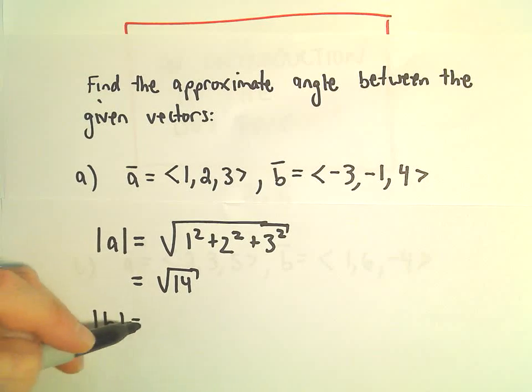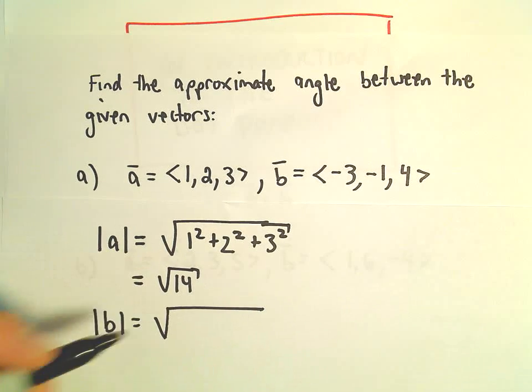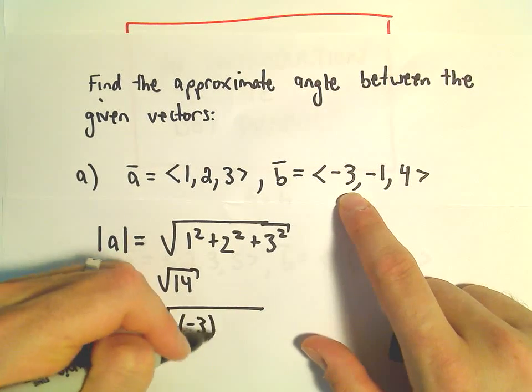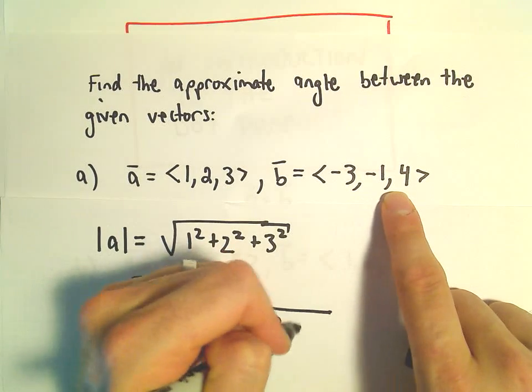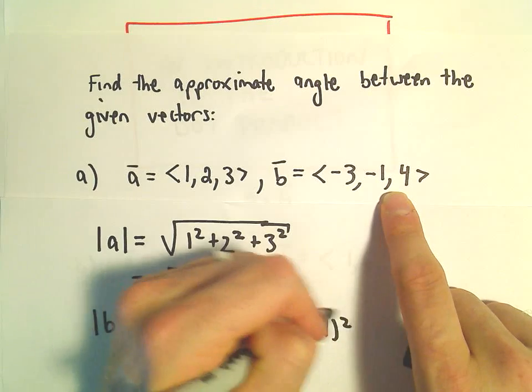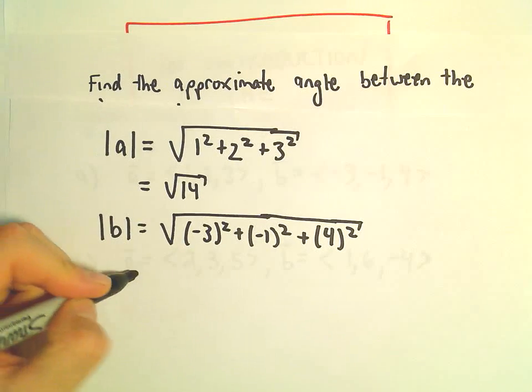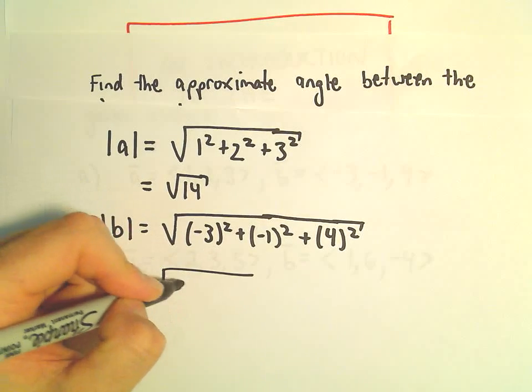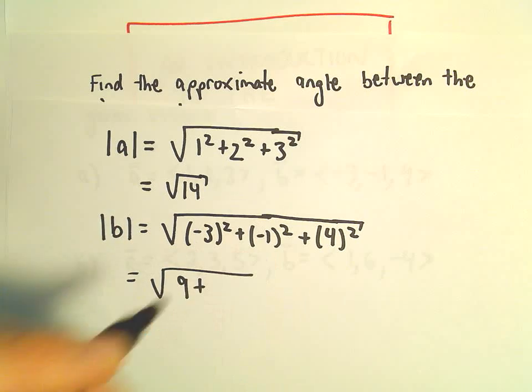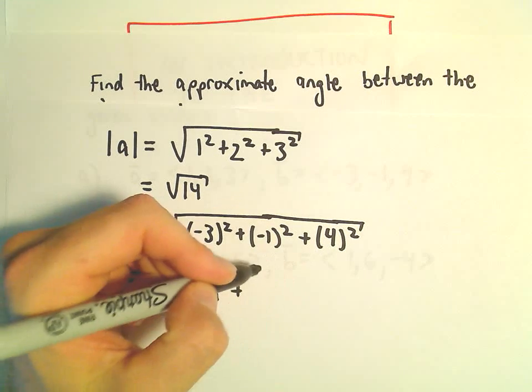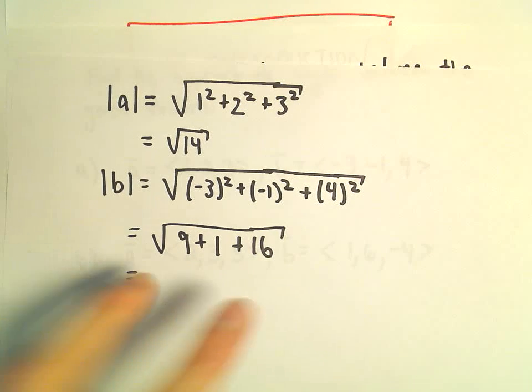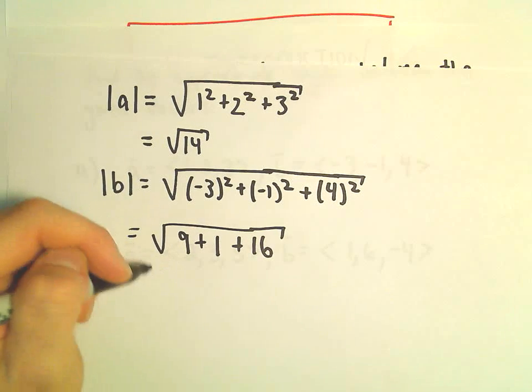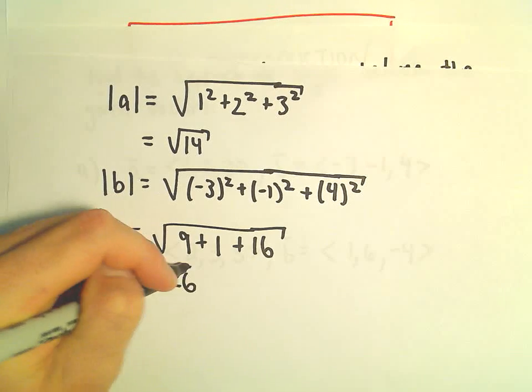The magnitude of vector b, we'll have to take negative 3 and square it, negative 1 and square it, and then we'll add 4 squared. So negative 3 squared is 9, negative 1 squared is 1, 4 squared is going to be 16. So it looks like we've got 10 plus 16 or the square root of 26.